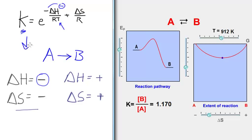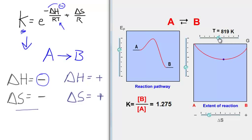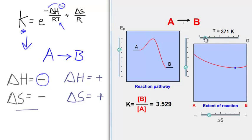So K should go down with increasing T, and therefore it should go up with decreasing T. Let's check: we should see the equilibrium point shift to the right as I decrease T and this number should go up. And sure enough, it does — increasing the equilibrium constant as that point increases as well.